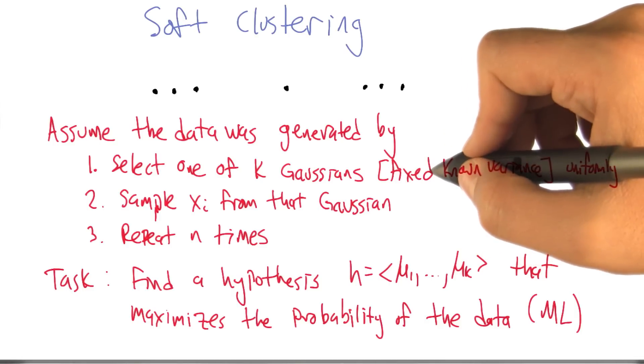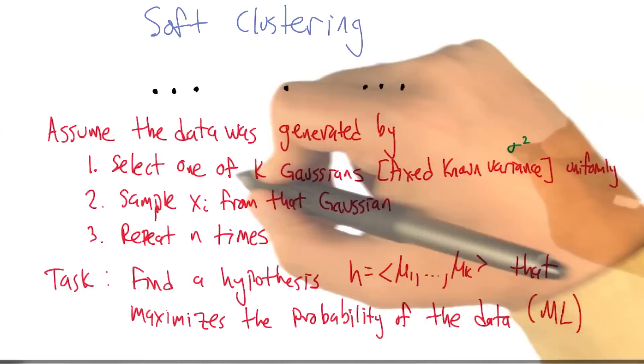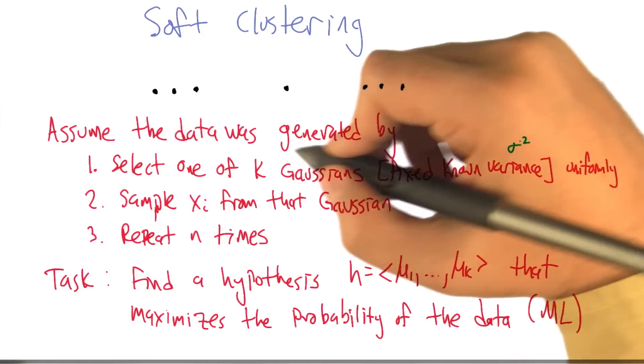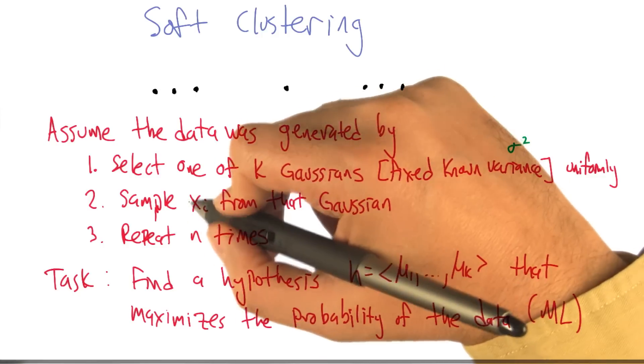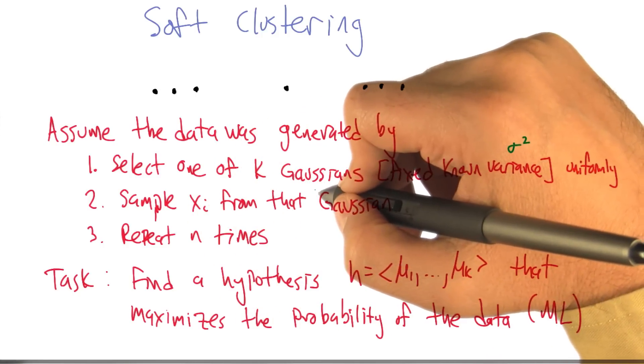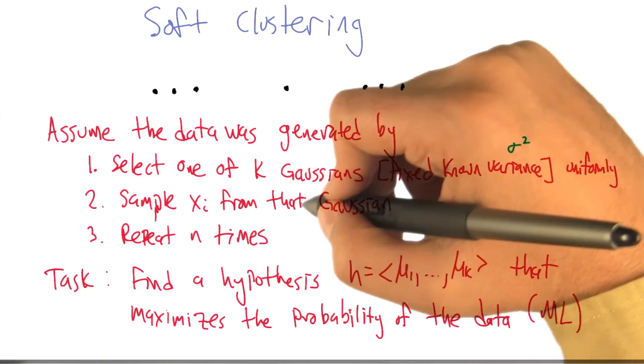Let's assume that we know the variance, sigma squared, and that the k Gaussians are sampled from uniformly. And then what we're going to do is, given that Gaussian, we're going to select an actual point, an actual data point in the space from that Gaussian.